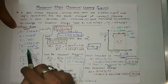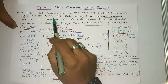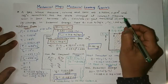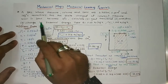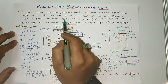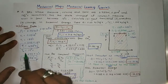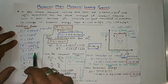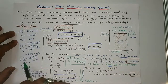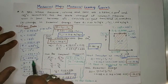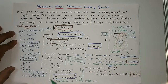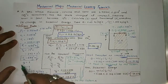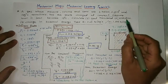Converting T1 into Kelvin gives T1 equal to 458 Kelvin. The state changes at constant pressure until the temperature becomes 15 degrees centigrade, so T2 equals 15 degrees centigrade, which converts to T2 equal to 288 Kelvin. We need to calculate: first, heat transfer Q; second, work done by the system W; and third, change in internal energy.